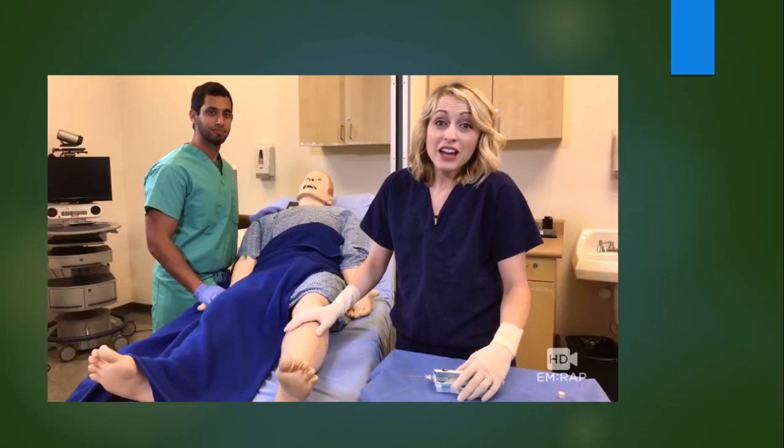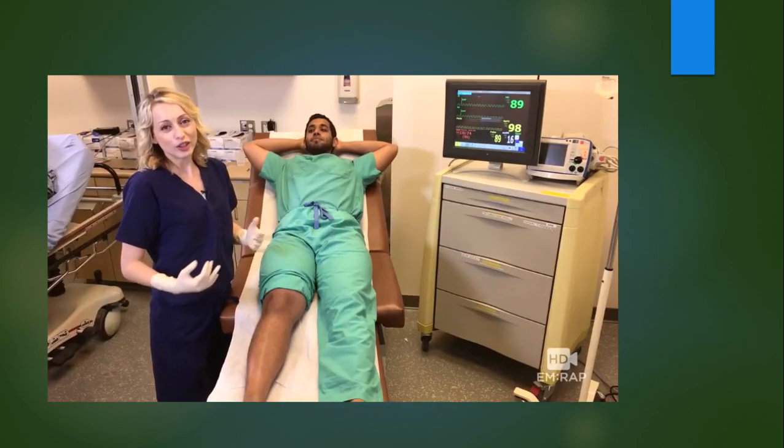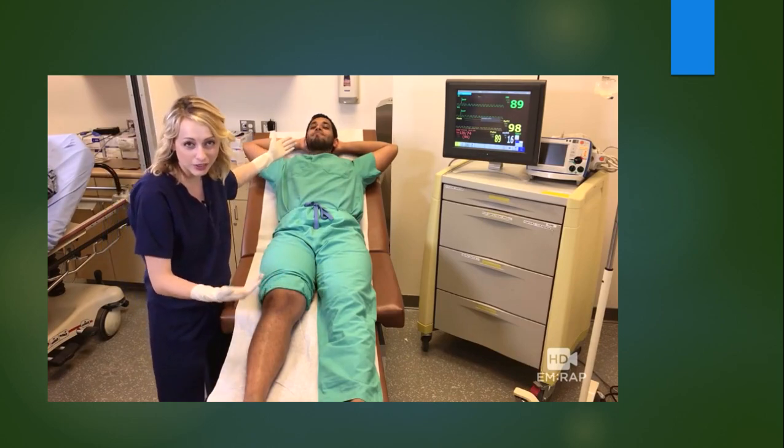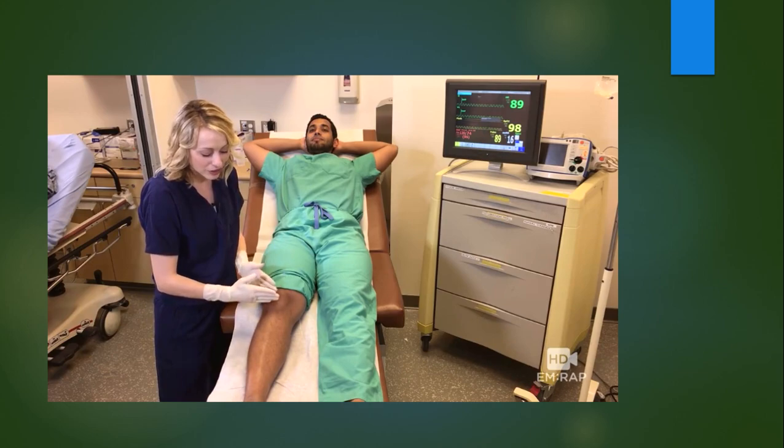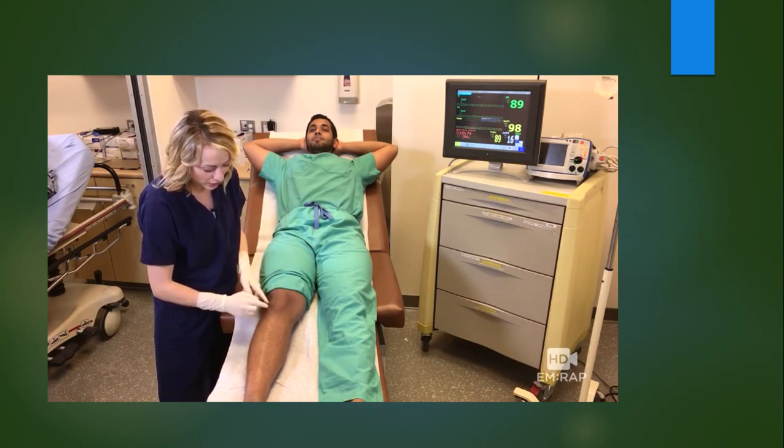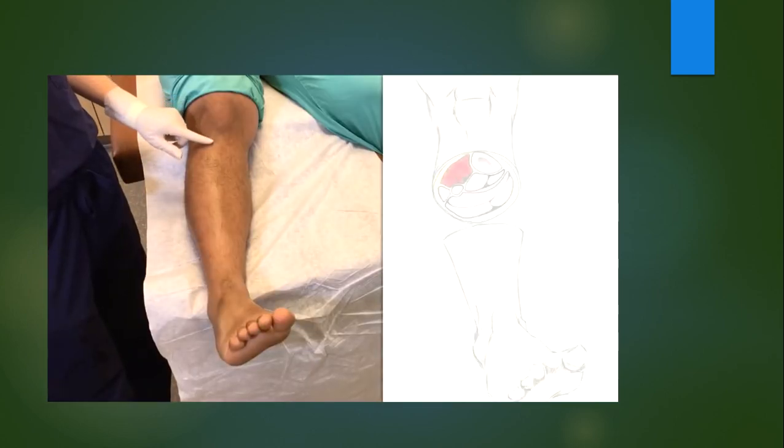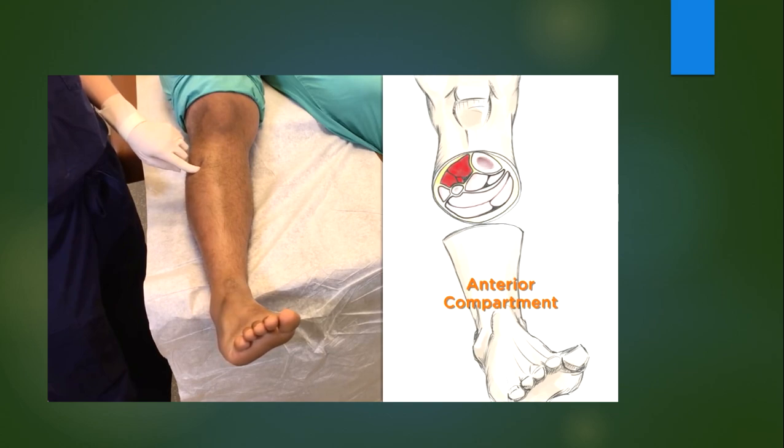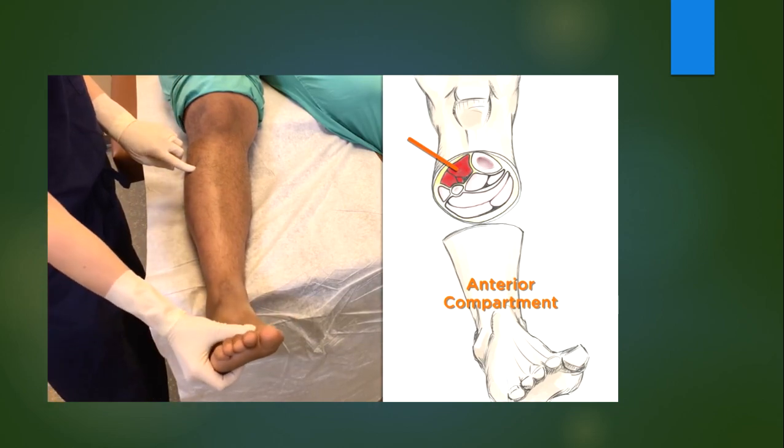How about now we review the anatomic compartments. The lower leg has four compartments that Dr. Hamoud has volunteered to help us demonstrate. For all of the compartments, you're going to go at the imaginary cross-sectional line about one-third the way down the top. For the anterior compartment, palpate the tibia and go one centimeter laterally. Insert the needle one to three centimeters deep and the pressure should rise with plantar flexion of the foot.